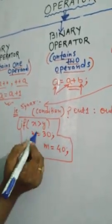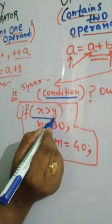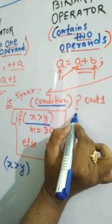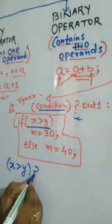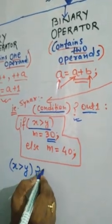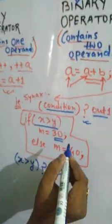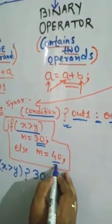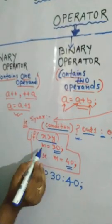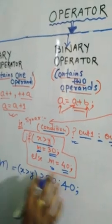The first thing in the ternary syntax is the condition, so we write x greater than y. Then we write the question mark. The first output is 30, so we write 30. Then we write a colon, and the second output is 40, so we write 40. Since 30 and 40 are the value of m, we write m equals this whole expression as the final answer.